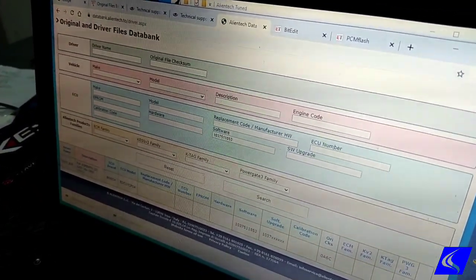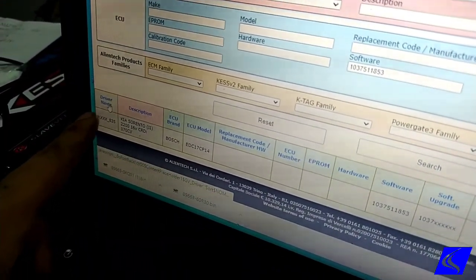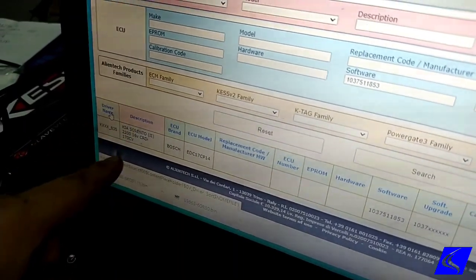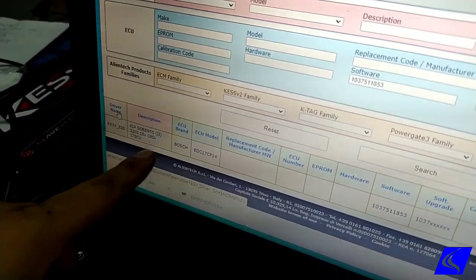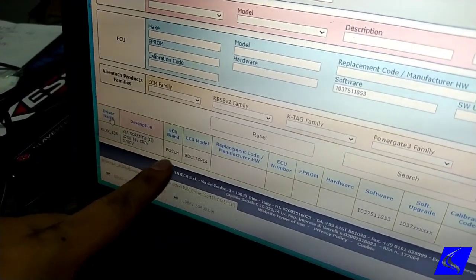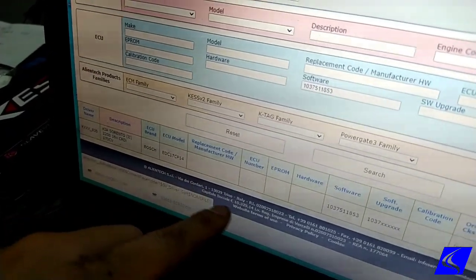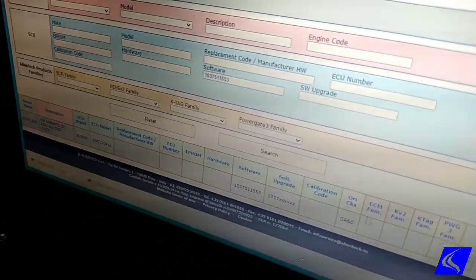Luckily, something comes out here. We have it here right there. So this is the driver name. This is basically the table of contents that we need. This is the description of what that driver is. Kia Sorento 2.2, 16-valve CDI. The ECU is Bosch. This is the processor itself. This is the software number.